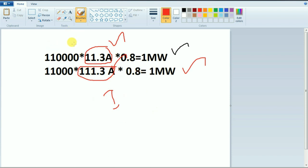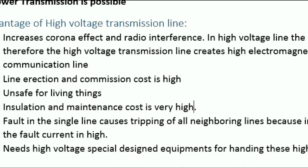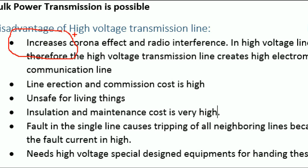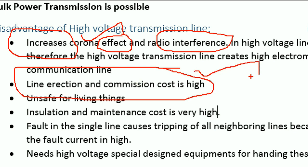This is the main point — this is why the losses are reduced. Let's look at the positive side and the negative side — there are disadvantages. What is the effect of corona? We will check the video in Tamil. What is the effect on the communication line? That is interference. That is why we have a tower line and an overhead line. We have to do line erection and commissioning, and we have to manufacture towers and insulators.